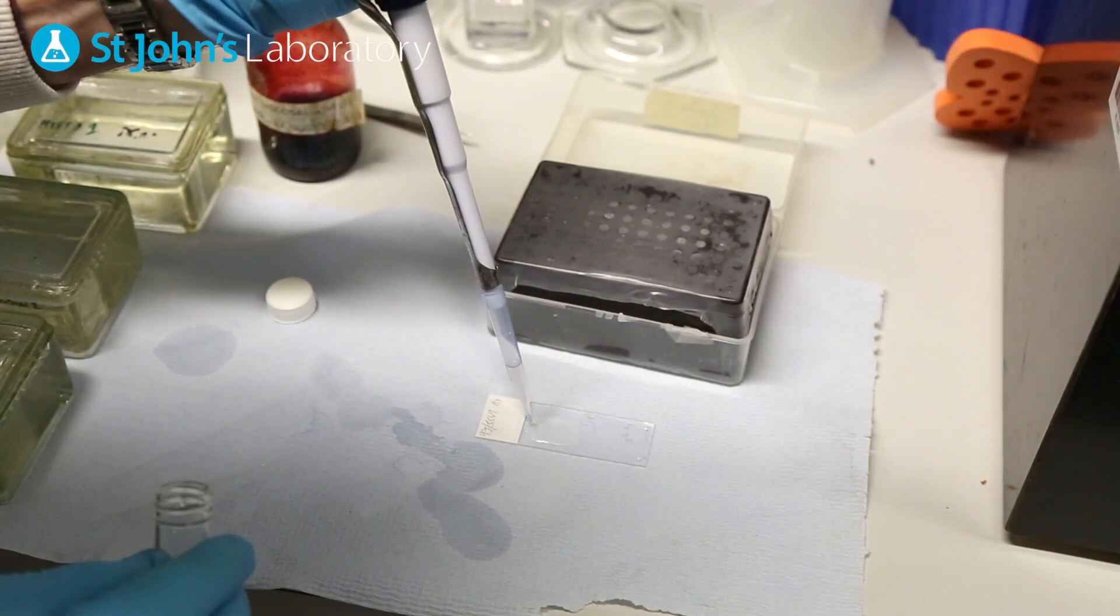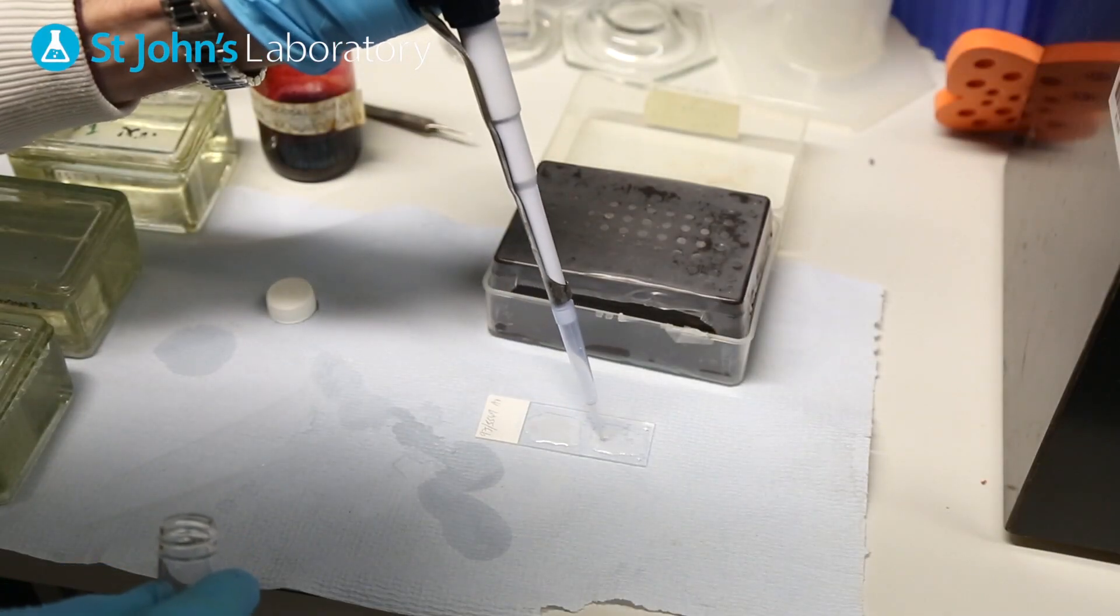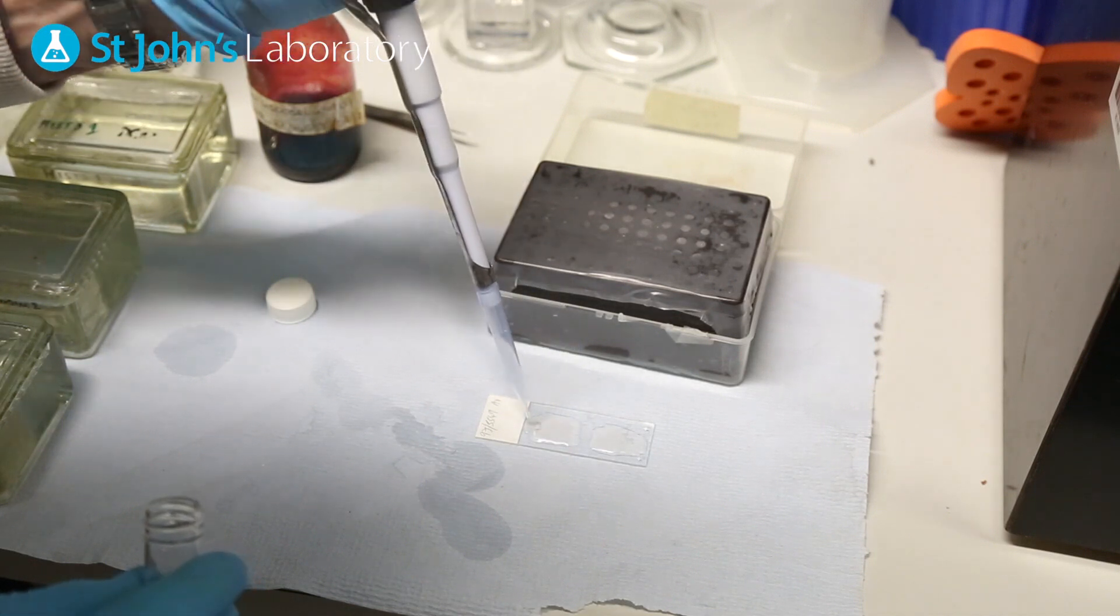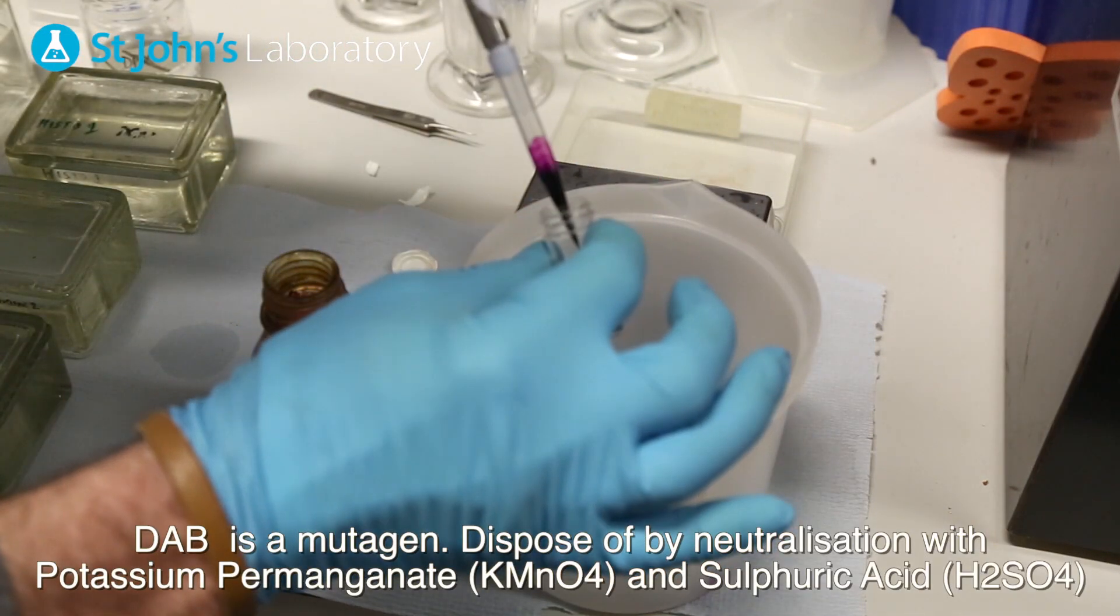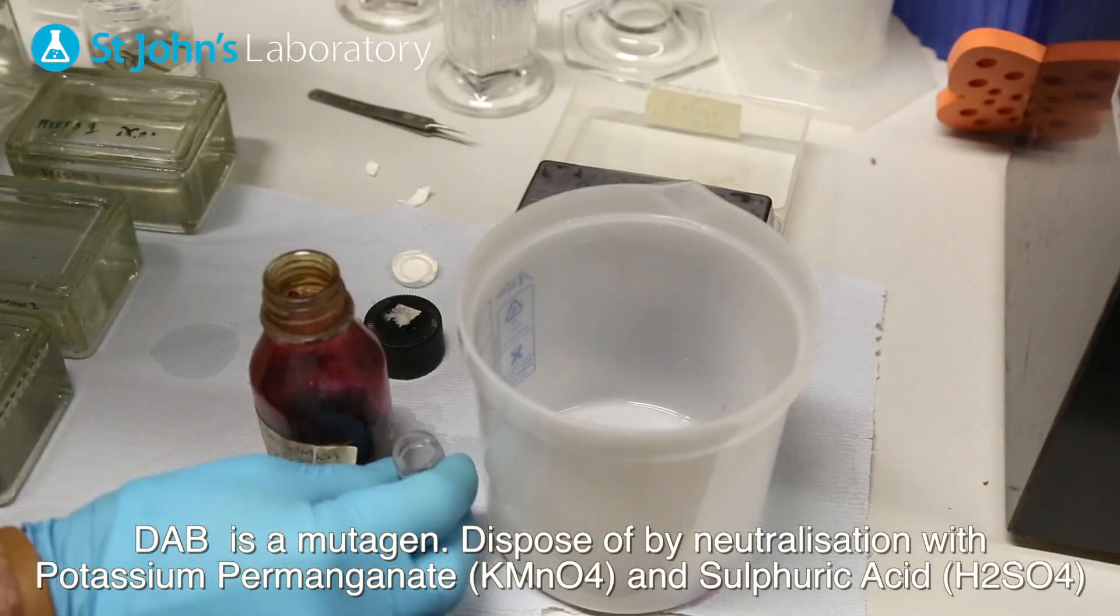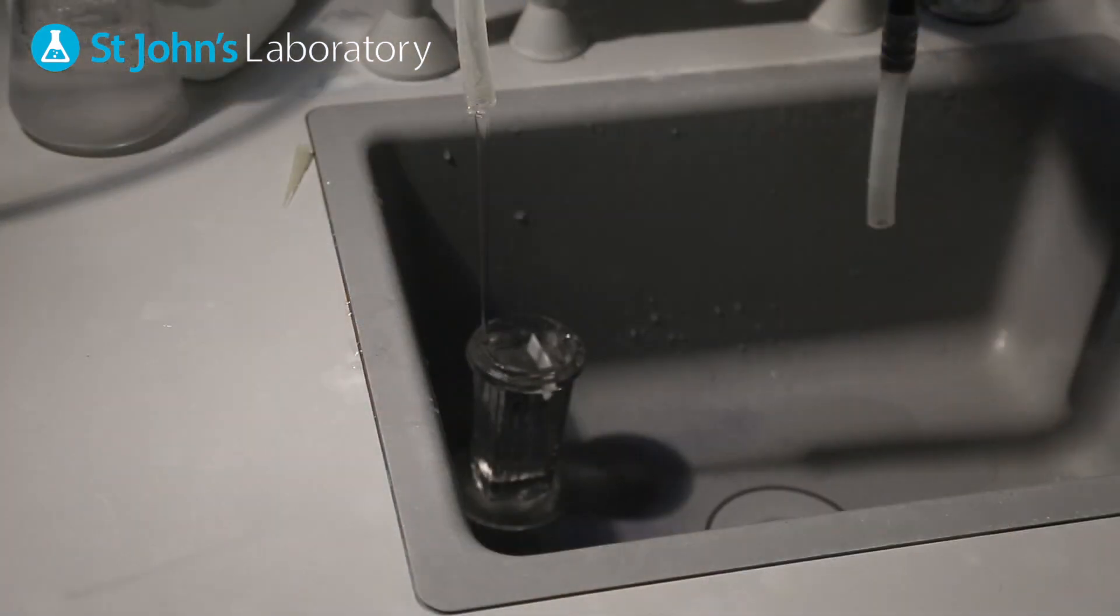DAB forms a brown stain when it reacts with HRP in the presence of peroxidase. A 10 minute incubation should be sufficient to see this reaction and identify where the peroxidase conjugated antibodies are bound.